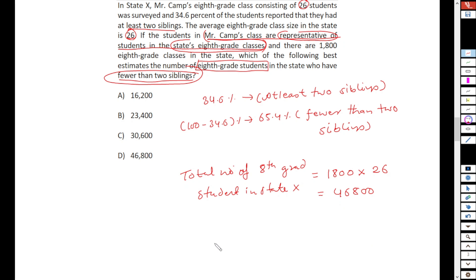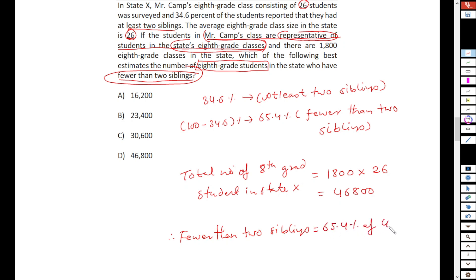Now we have to find the students who have fewer than two siblings. That is 65.4% of 46,800, which equals approximately 30,607. So the approximate answer is 30,607, which means the answer is C. This is the best method to solve this problem.